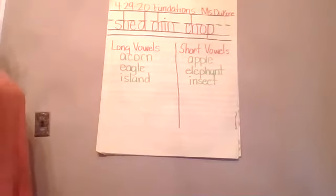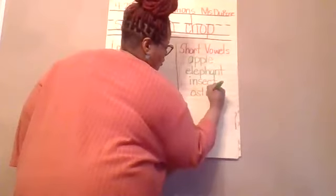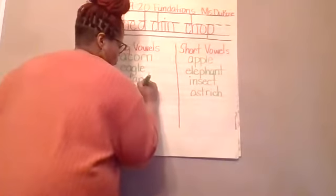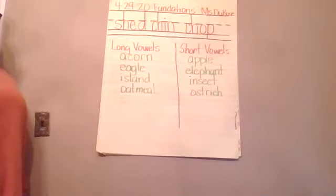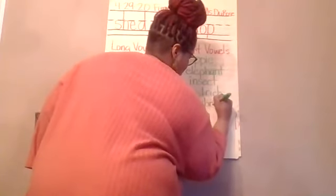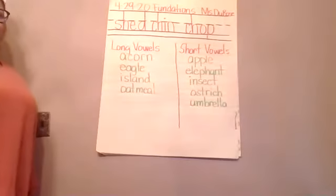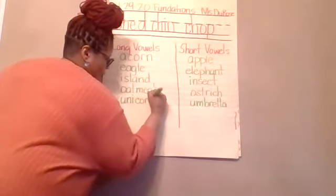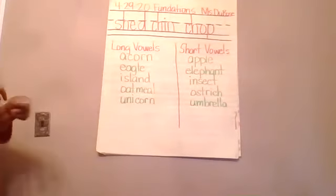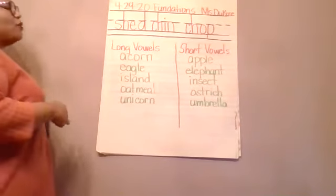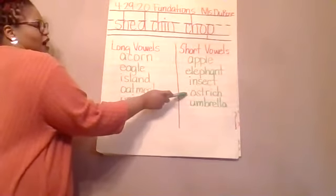Island — long. Ostrich — short. Oatmeal — long O. Umbrella — short U. Unicorn — long U. So the long vowel example words for today are: acorn, eagle, island, oatmeal, unicorn. And the short vowel words are: apple, elephant, insect, ostrich, umbrella.